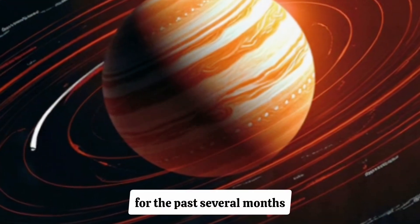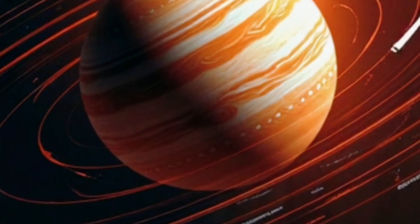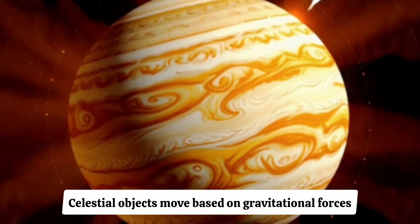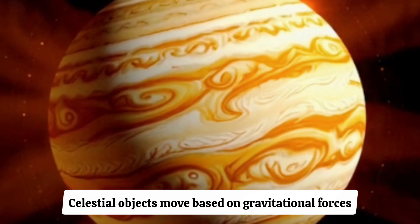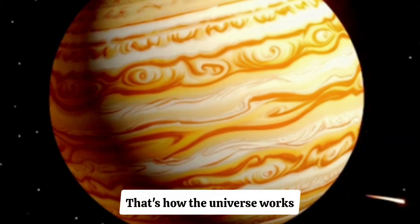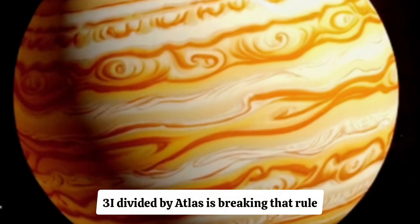But hold up, that's just the first layer of weirdness. The deeper layer, the part that keeps experts awake at night, is that 3i divided by Atlas should not even be on this exact trajectory to begin with. Because, for the past several months, it has been experiencing non-gravitational acceleration. Now, let me break that down in a way that isn't boring. Celestial objects move based on gravitational forces. The sun pulls them, planets pull them, nothing else does. That's how the universe works. Except, 3i divided by Atlas is breaking that rule.